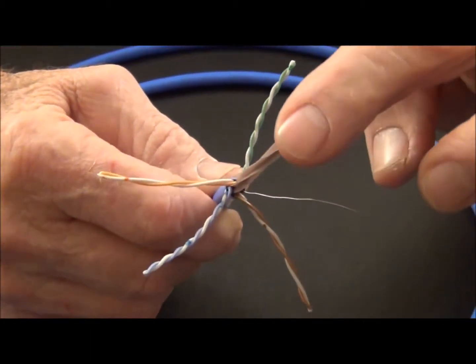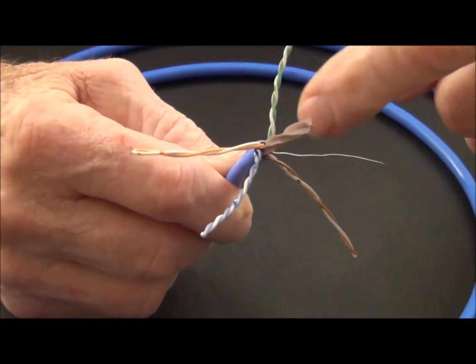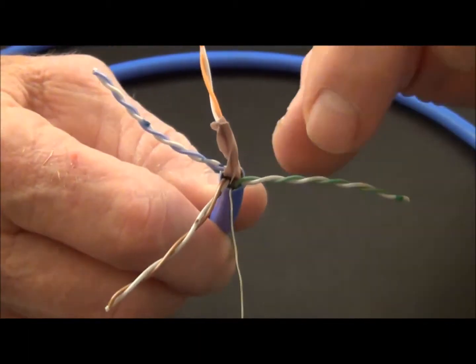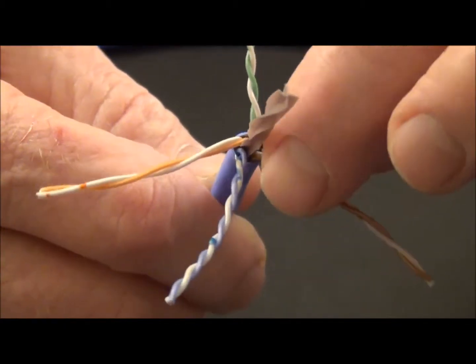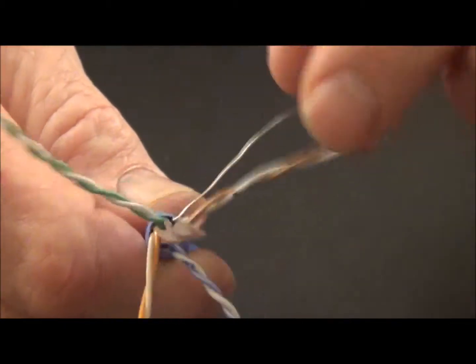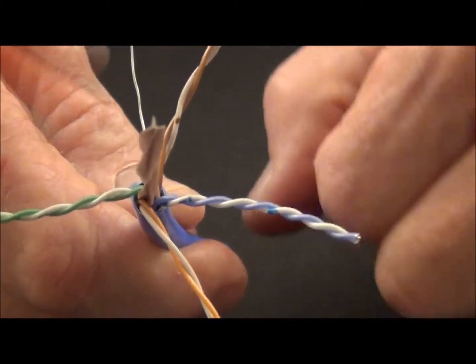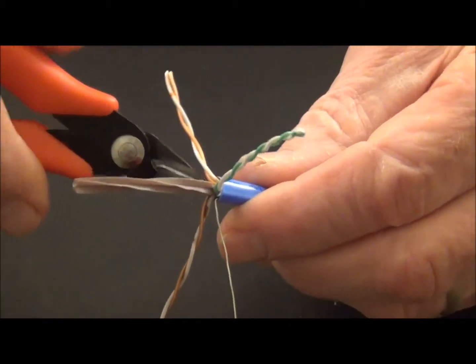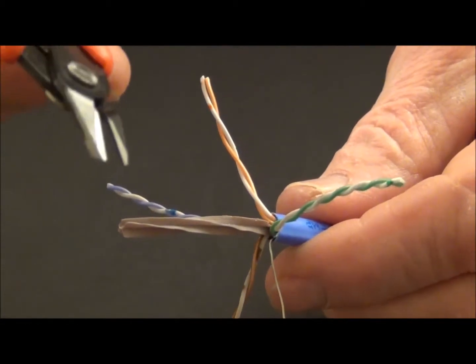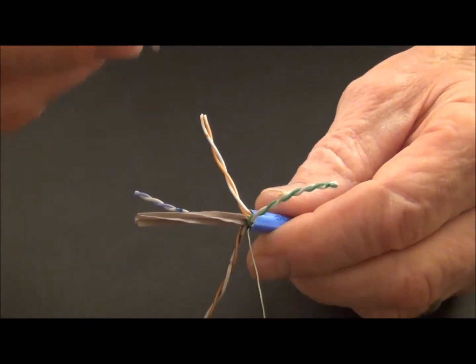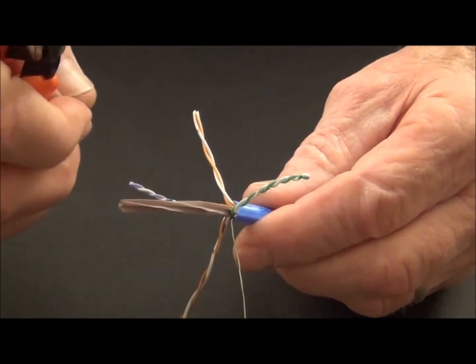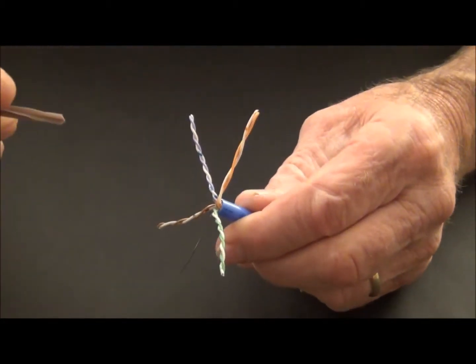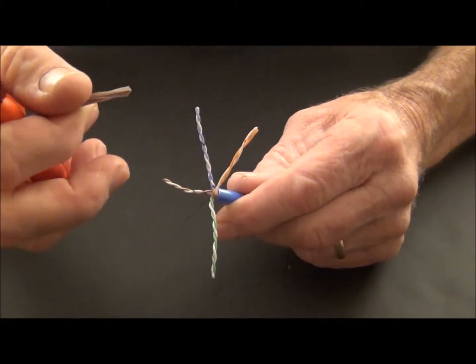So we're going to need to remove this pair separator. We're going to cut it carefully down here right at the end of the jacket. Make sure when we cut it we do not nick these conductors. And let's go ahead and prep this cable, separate them, lay them out and let's see how this works. And of course what I'm doing here is using our flush cutter, the 10-531. A great cutter to have in your toolbox for doing flush cuts. And I've taken this pair separator and now it's removed. And now we're going to separate the pairs.